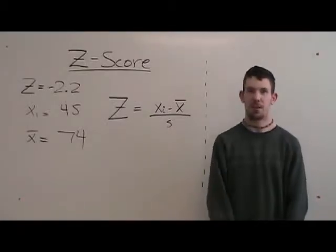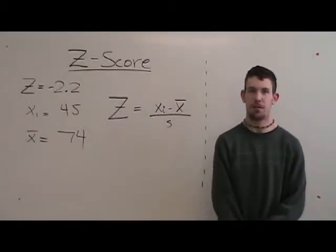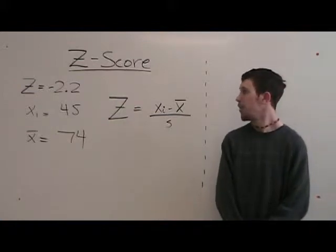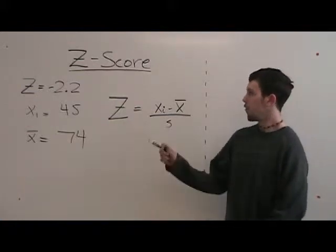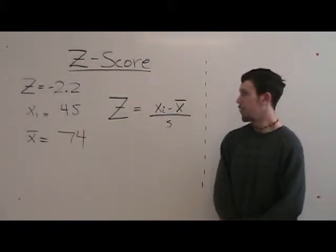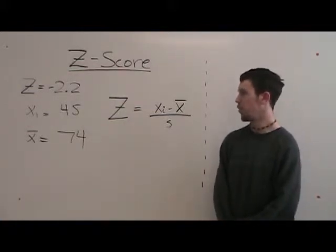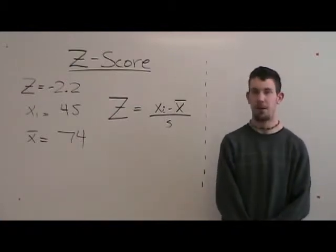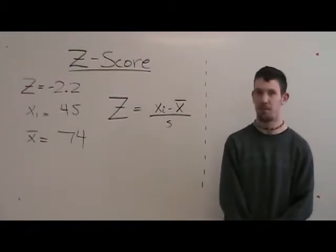This is how you use the z-score formula to find the standard deviation. In the first problem, the z-score is negative 2.2, the xi is 45, and the x-bar is 74.